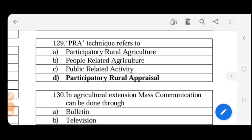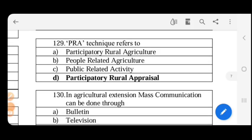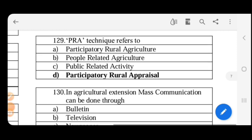PRA technique refers to Participatory Rural Appraisal. It is a method used in planning and management programs to create awareness among rural people.